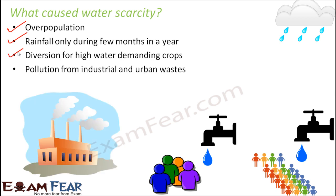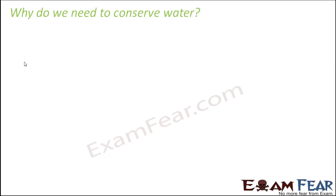Pollution from industrial and urban waste is also a major cause. Industries and factories dump harmful, poisonous waste directly into nearby water bodies like ponds and rivers. This pollutes the water, making it unfit for drinking, washing, or bathing. Cleaning and purifying that polluted water requires a huge and costly process, further reducing the availability of good-quality water.